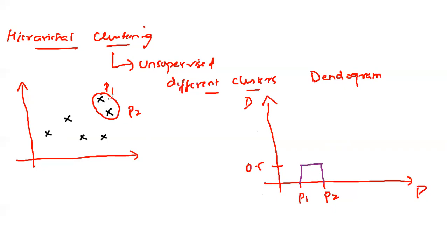Then after that, we'll try to find out the distance between this cluster and this point and try to find out which are the next nearest points. And I found out that these two are the nearest points. And here I'm going to specify this as P3 and P4.